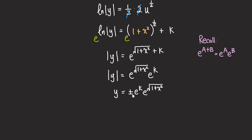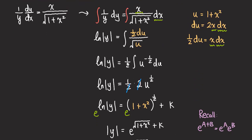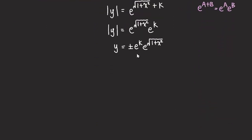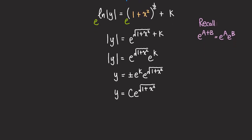Note that y cannot equal 0 in this expression. If we had simply divided by y from the start, we would have ruled out the constant solution y equals 0 — so always pay attention to constant solutions that can disappear when you divide by y. The non-constant solution is y equals C times e to the square root of 1 plus x squared, where C represents plus or minus e to the k. That's it for this problem. Thank you for watching, I will see you next time.